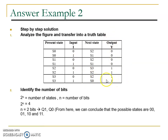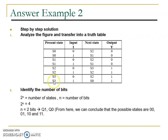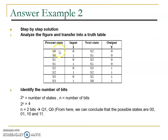How about output Y? From this figure, the output is 1 only for S2 and S3. Because this is Moore model, any present state that is S2 or S3 gives output 1. States S0 and S1 give output 0.